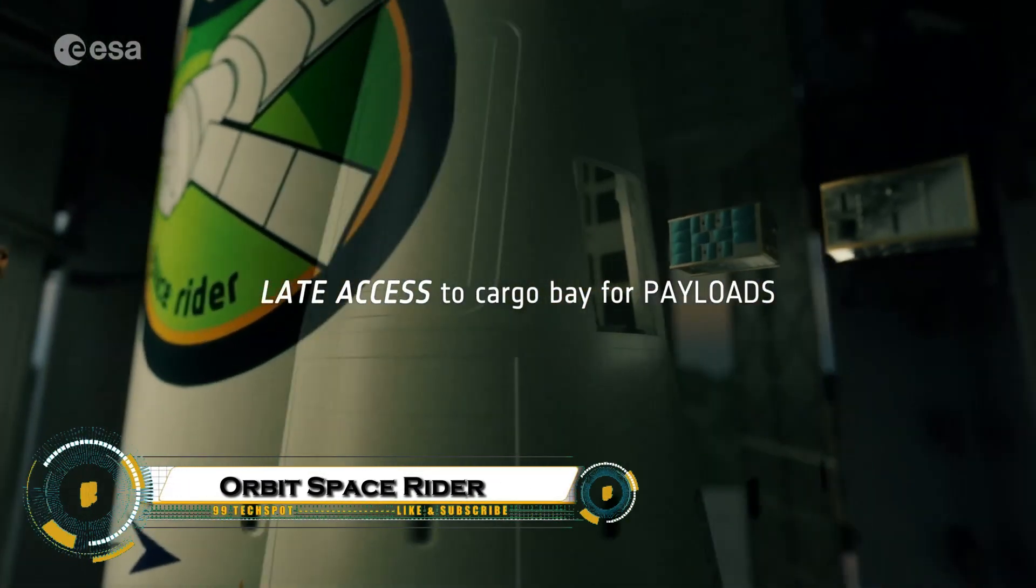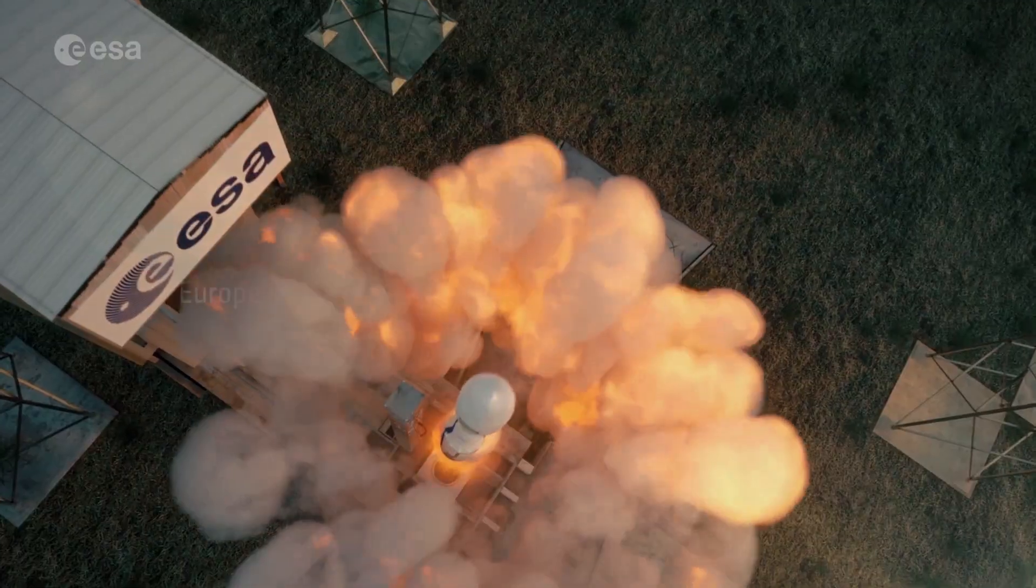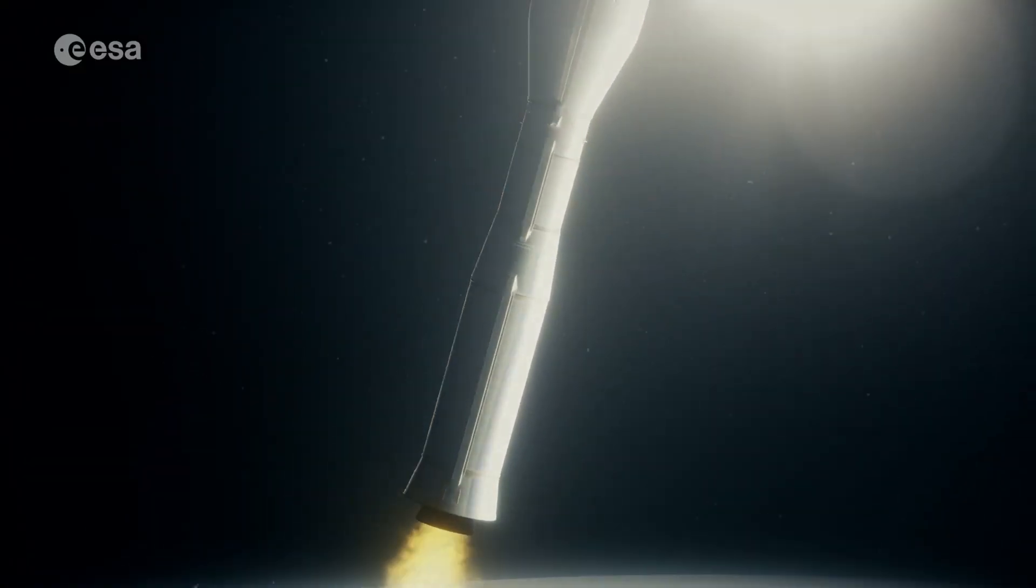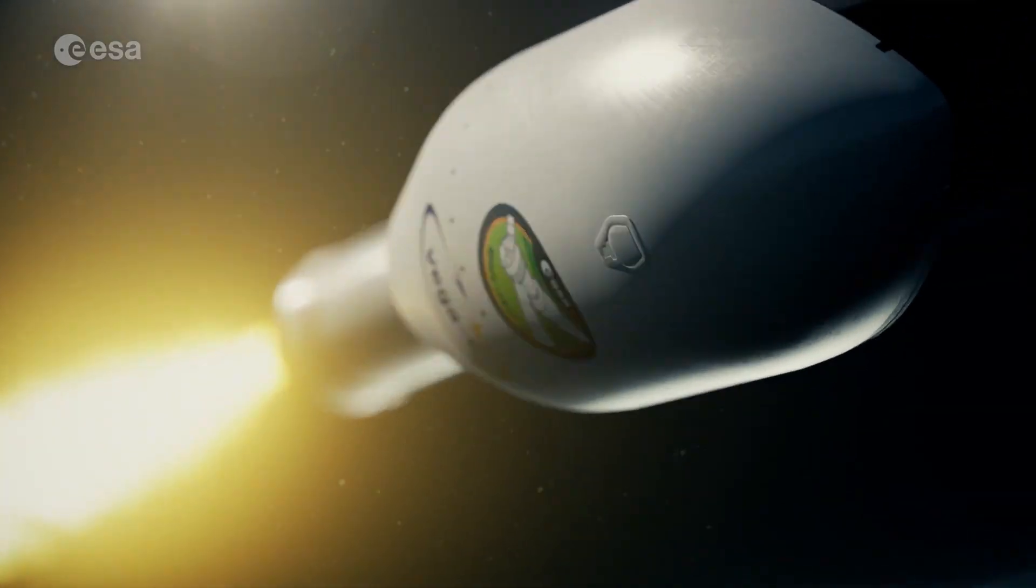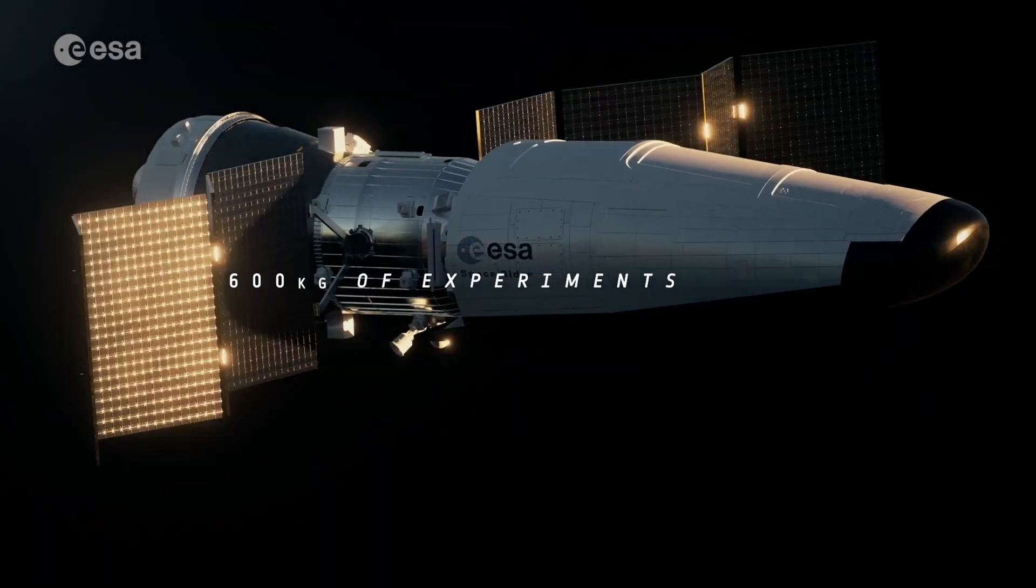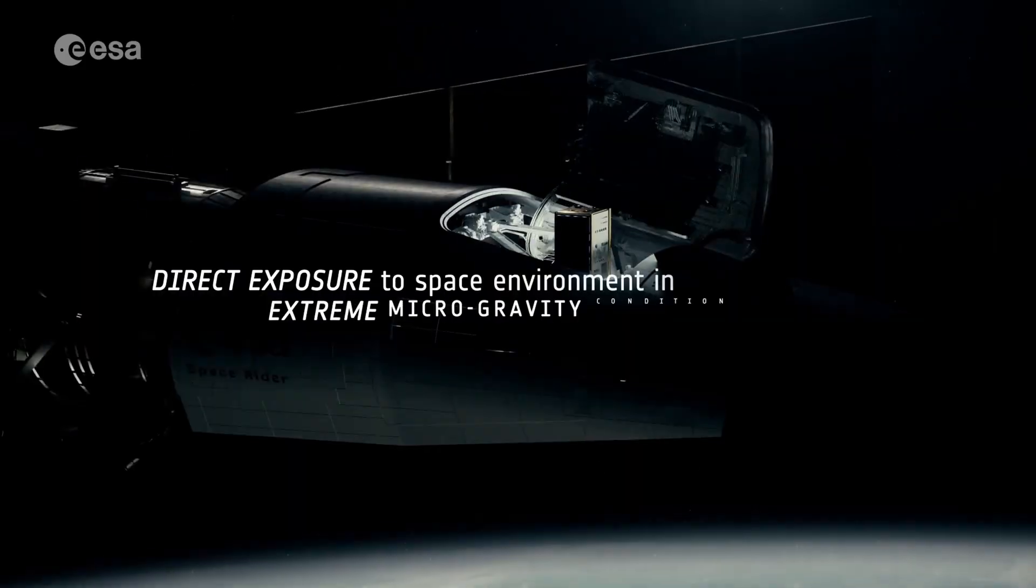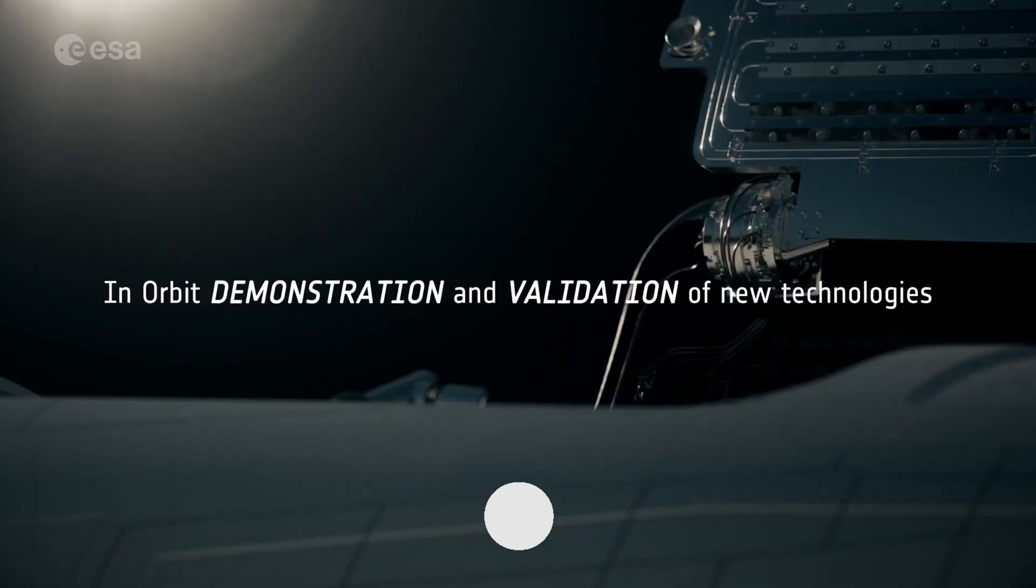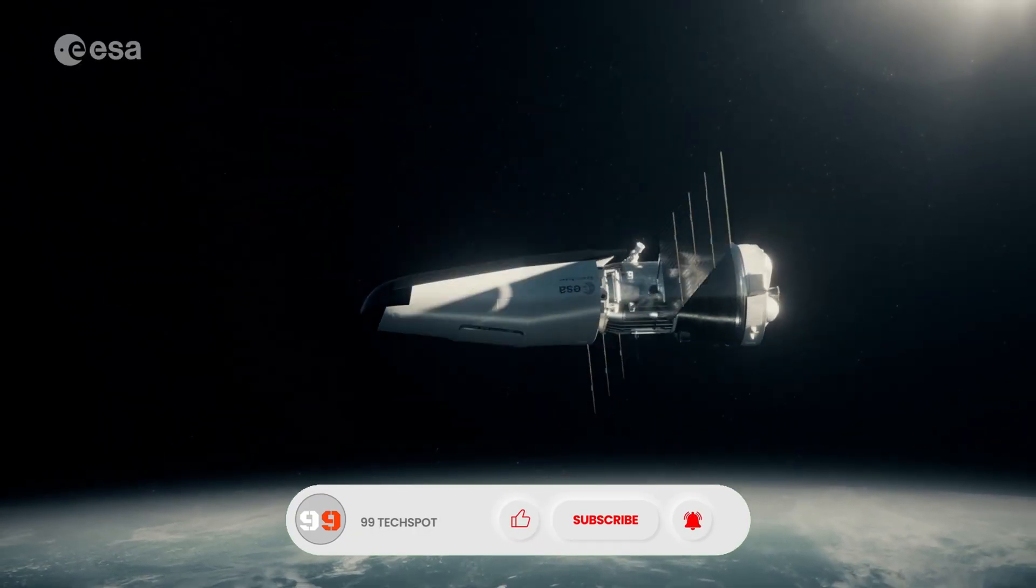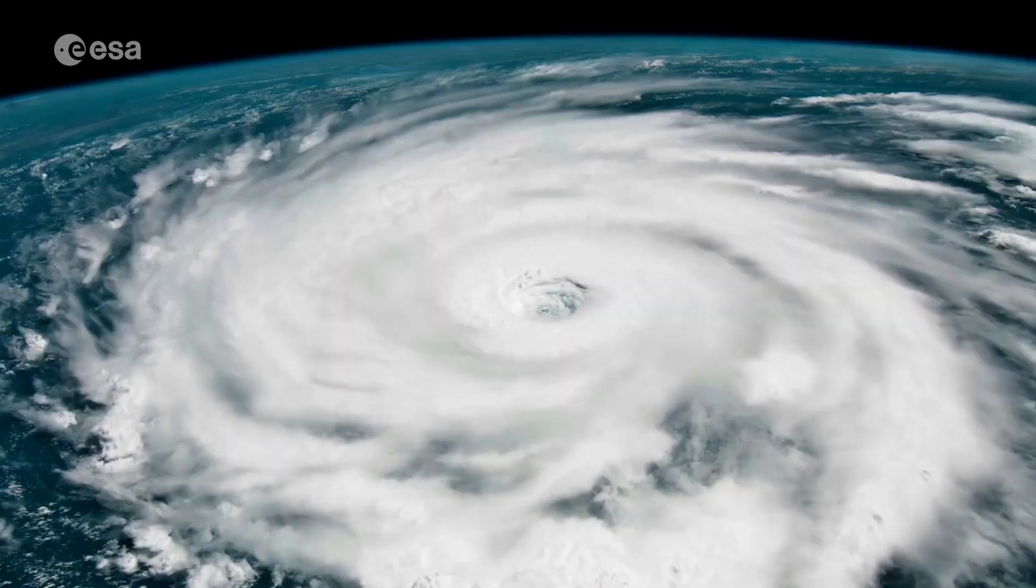SpaceRider is Europe's reusable space laboratory launching in 2027, an uncrewed spacecraft the size of two minivans that spends up to two months in orbit conducting experiments in pharmaceutics, biology, and physical sciences with 600 kilograms of cargo. After its mission, it autonomously returns through the atmosphere at 28,800 kilometers per hour, deploys a massive 70 square meter parafoil at 5 kilometers altitude, and precision lands within 150 meters of its target.